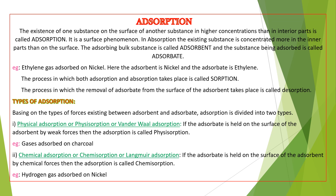First, let us know what adsorption is. The spelling is A-D-S-O-R-P-T-I-O-N. We generally hear about absorption, which is A-B-S-O-R-P-T-I-O-N, but this is a different topic called adsorption. Adsorption is a phenomenon in which one substance exists on the surface of another substance in higher concentrations than in the interior parts. Therefore, we call adsorption a surface phenomenon.